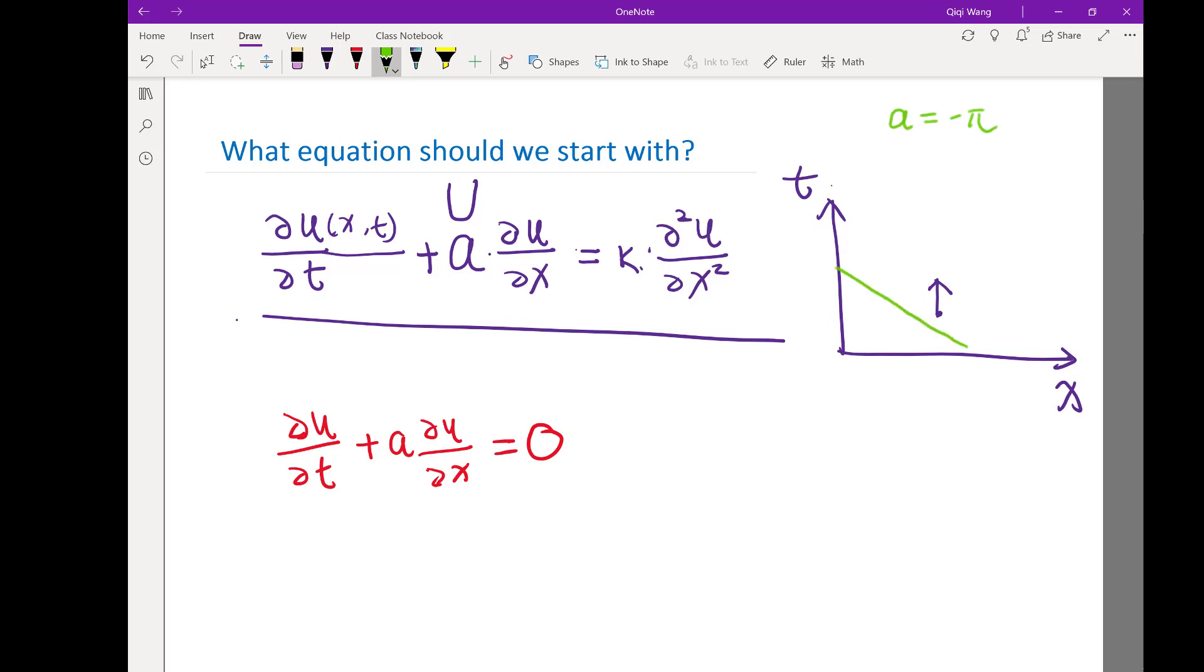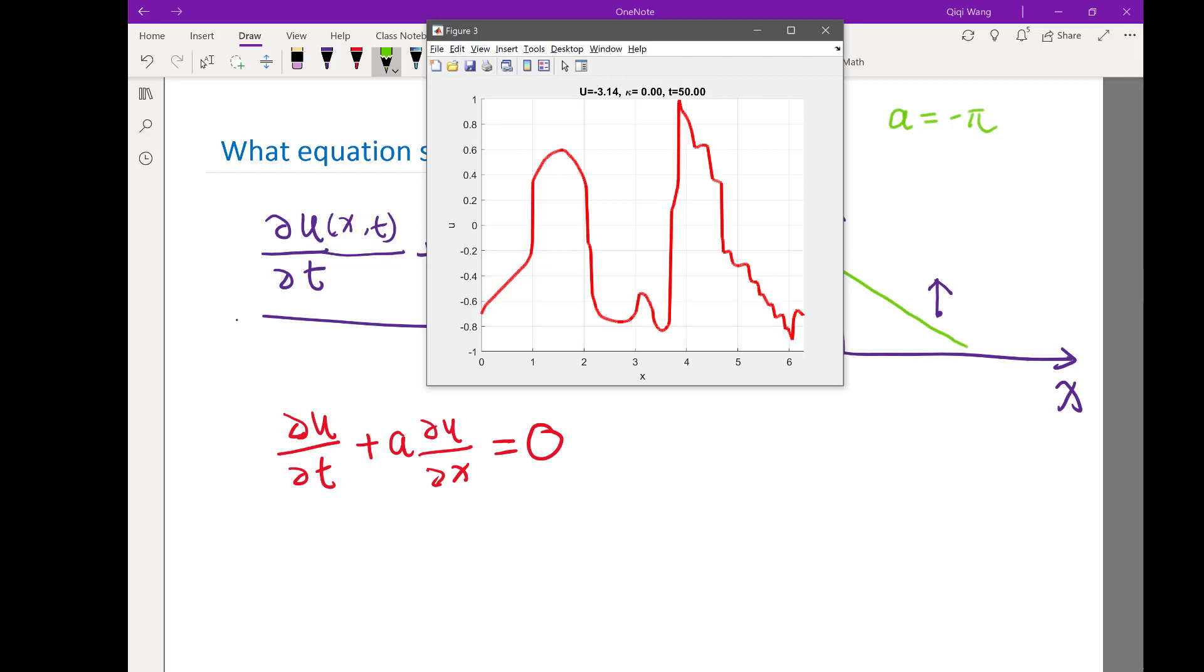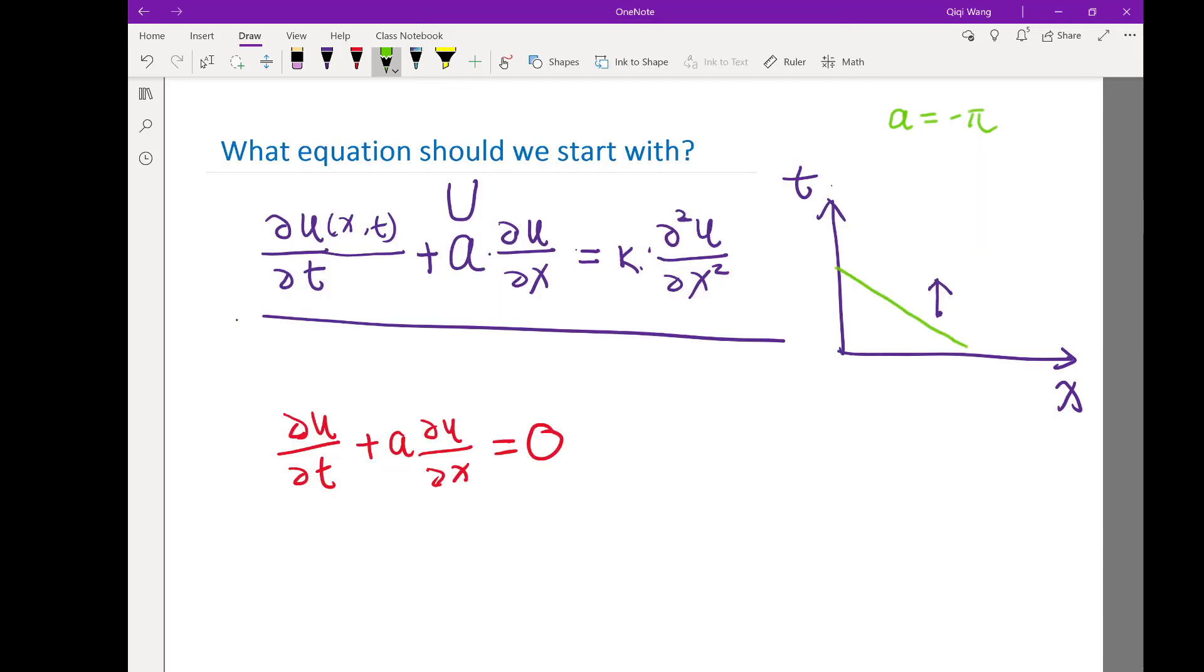And also the minimum value is going towards the left. As t increases, the minimum value comes towards the left, so does every value. All points, all the contours, are going towards the left except some places are red, some places are blue—different values.